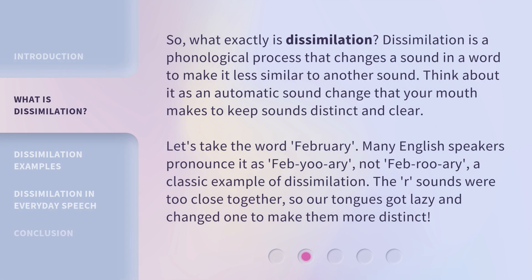So, what exactly is dissimilation? Dissimilation is a phonological process that changes a sound in a word to make it less similar to another sound. Think about it as an automatic sound change that your mouth makes to keep sounds distinct and clear. Let's take the word 'February.' Many English speakers pronounce it as 'Febuary,' not 'February' — a classic example of dissimilation. The R sounds were too close together, so our tongues got lazy and changed one to make them more distinct.